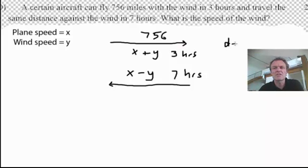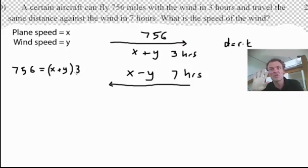Remember this: distance equals speed times time. So what's the distance? I'm going to do two equations now over here. 756 is the distance. Now, the speed with the wind, we've just said, is x plus y. That's the speed with the wind.